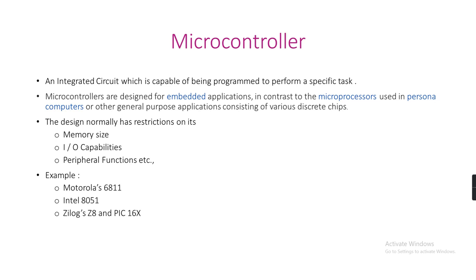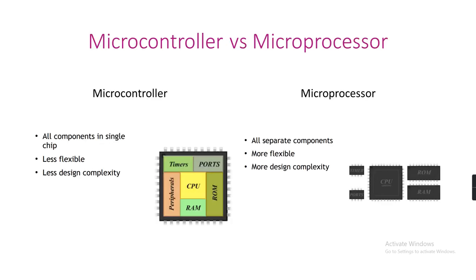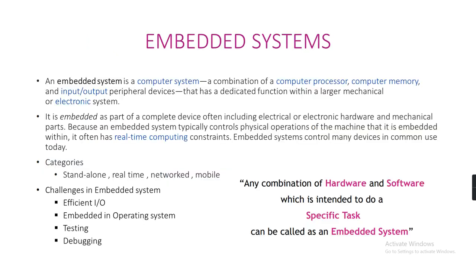An example of a microcontroller is the Intel 8051. Comparing microcontroller versus microprocessor: a microcontroller has all components in a single chip, while a microprocessor has all separate components. A microcontroller is less flexible and a microprocessor is more flexible. A microcontroller has less design complexity while a microprocessor has more design complexity.